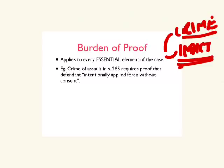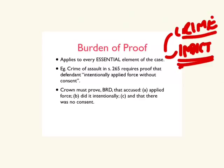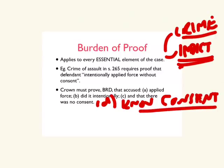To flesh it out with an example, here is a crime with its actus reus and mens rea as set out in the Code. The Crown must prove beyond a reasonable doubt that the accused applied force, that they did it intentionally, and that there was no consent. They also have to prove that the accused did not know that there was no consent. If they cannot prove any one of those things, an acquittal must be the result.